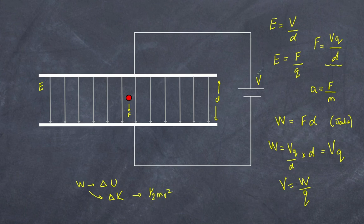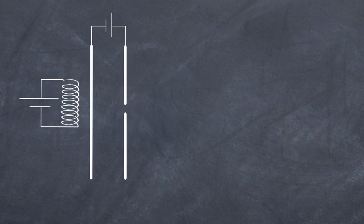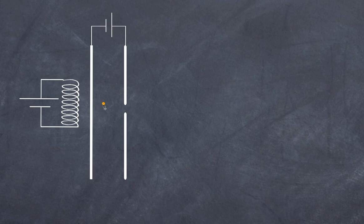Knowing the voltage, plate separation, charge, and mass, you can determine not only the work and force but also the velocity of the charge. Let's look at a worked example. Here I have a heating coil that releases an electron from a plate, which then accelerates — just like a cathode ray tube.